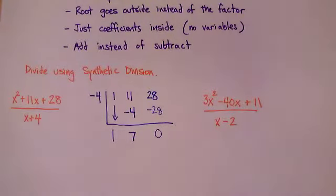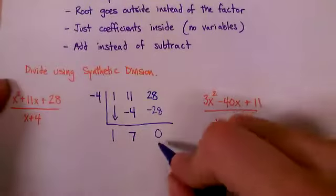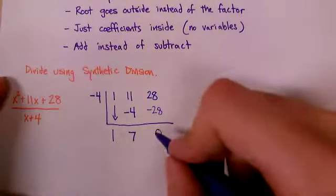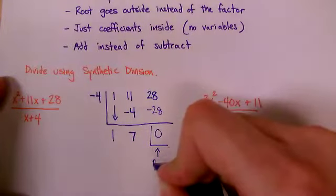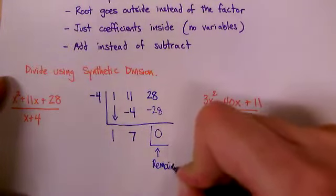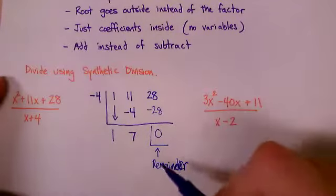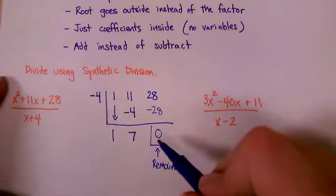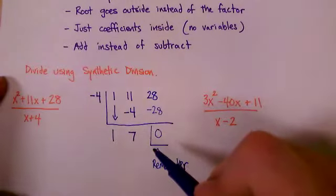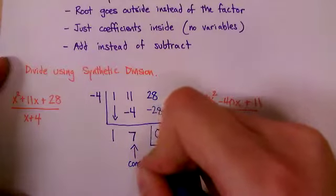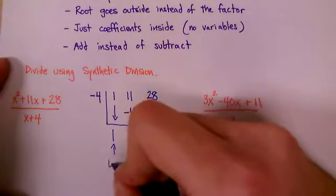When you get your answer, you have to interpret it. The first number you read it actually backwards, starting with the zero here. This is your answer. This guy is like your remainder. So that guy right there, the remainder, tells you that there is no leftover, no remainder. So it goes in evenly. This next term right here, it works backwards. This is your constant term. This guy is your linear term.